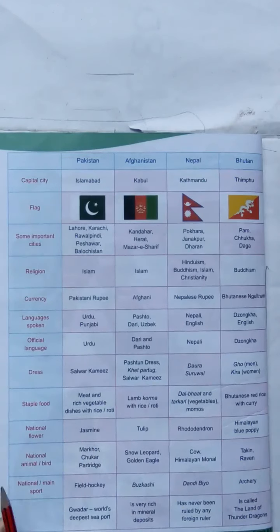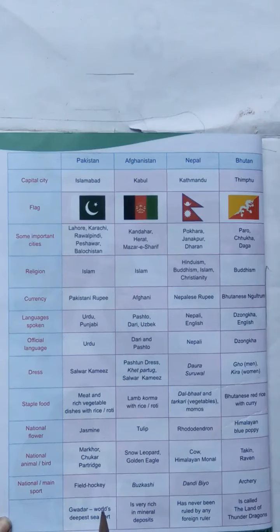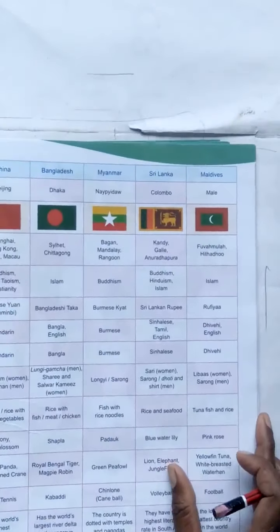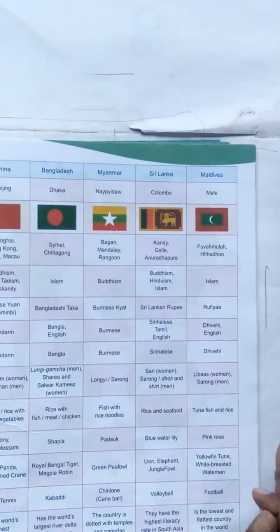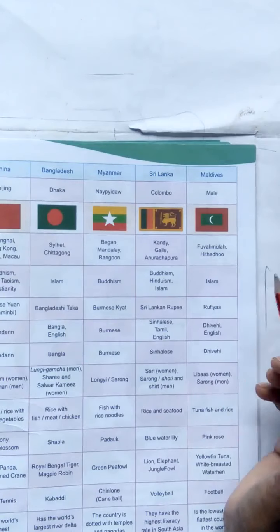In India our national flower is lotus. Each country has different languages, national flowers, national birds, national sports, dress, and food items — so many traditions are different. The second one is Afghanistan, then Nepal, Bhutan, China, Bangladesh, Myanmar, Sri Lanka, and Maldives. They have given here all the information about each country. You have to read it carefully. Every country has a different flag and currency.